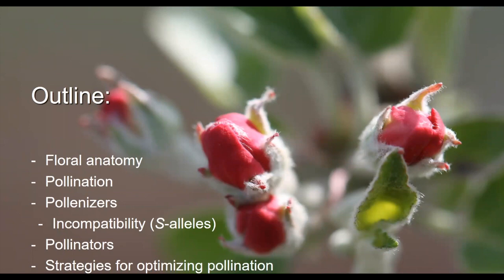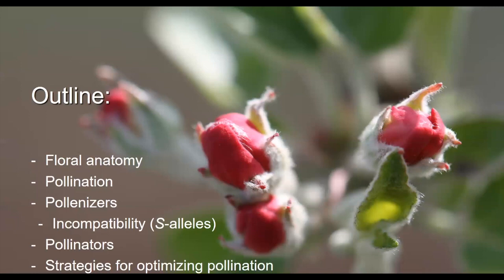Here's an outline of subjects we'll touch on briefly. It's impossible to cover all the intricacies of fruit set, pollination, and flowering, but in this first webinar we'll cover some basics of floral anatomy, pollination itself, and then the two main components of pollination in orchards — pollinizers, including incompatibility and S alleles, and pollinators. I want to finish by looking at strategies for optimizing pollination — not maximizing, because that would be a whole other webinar.